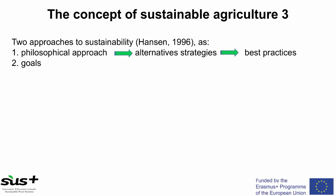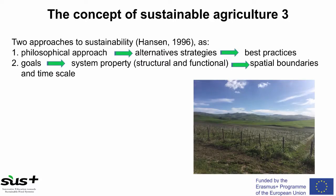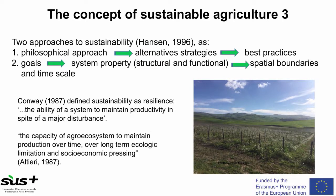In the second vision, sustainability as a system property, the sustainable agricultural system is defined as one that fulfills several goals through time. Those goals generally include maintenance or enhancement of the natural environment — like biodiversity and water — or provision of human food needs, economic viability and social welfare. Conway in 1987 defined sustainability as resilience: the ability of a system to maintain productivity in spite of a major disturbance. In the same year, Miguel Altieri defined the capacity of agroecosystems to maintain production over time, over long-term ecological limitations and socioeconomic pressures.